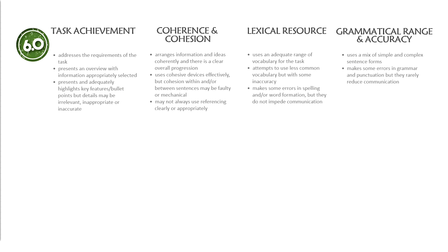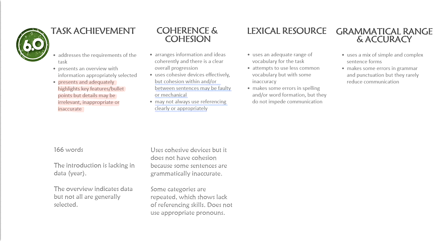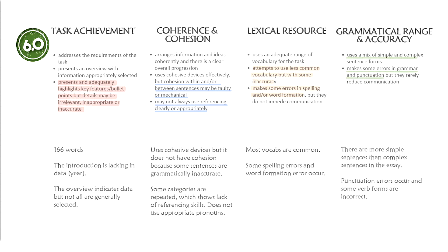Now we can see why the former sample gets only 6.0 by rechecking the IELTS band descriptors. Firstly, it has 166 words, but the introduction lacks data and the overview does not have all general data. The report's cohesion is affected by the inaccuracy of some sentences and it does not use referencing clearly. Thirdly, common and basic words are used with errors in spelling and word formation. Lastly, most sentences in the report are in simple forms and some verb forms are inaccurate, affecting the grammar of the sentences.